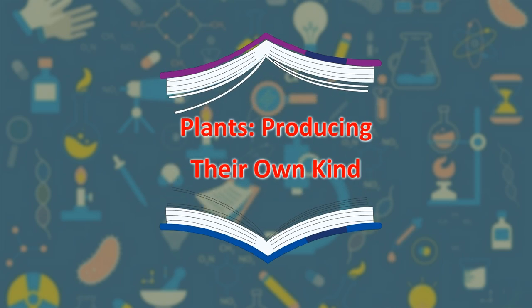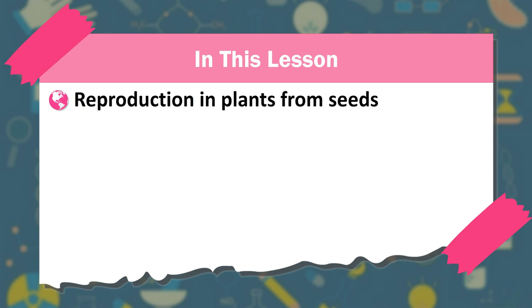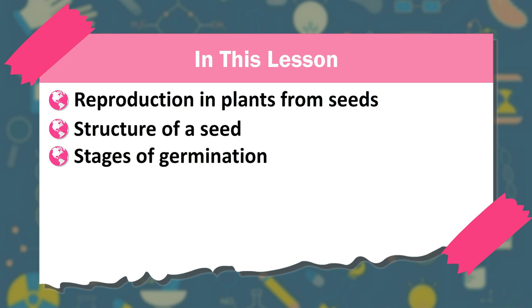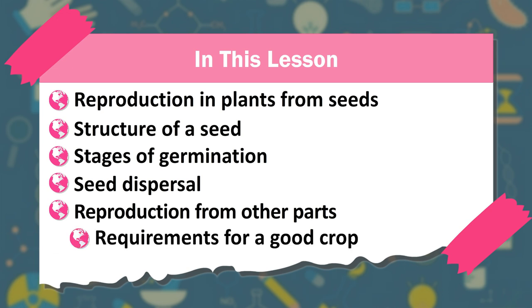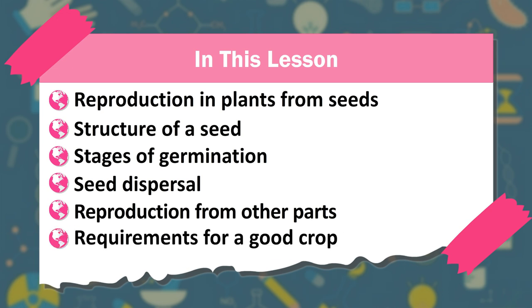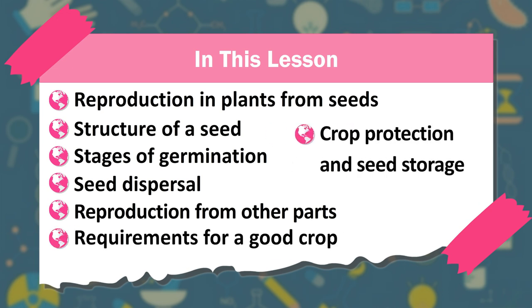Plants: producing their own kind. In this lesson, we will cover: reproduction in plants from seeds, structure of a seed, stages of germination, seed dispersal, reproduction from other parts, requirements for a good crop, crop protection and seed storage.